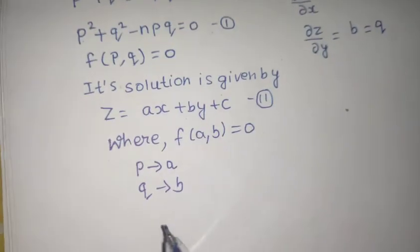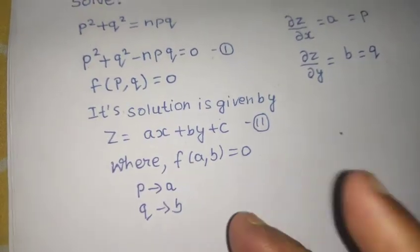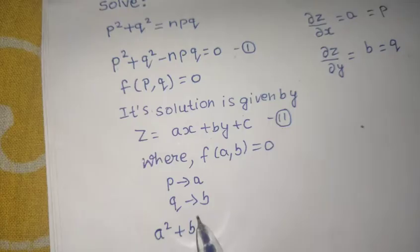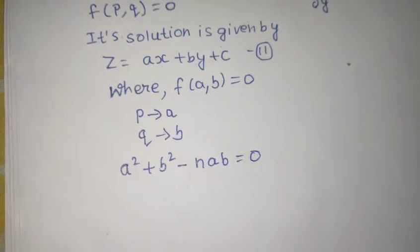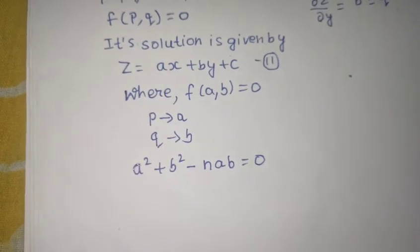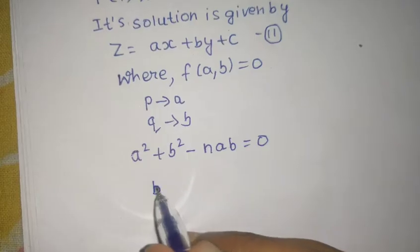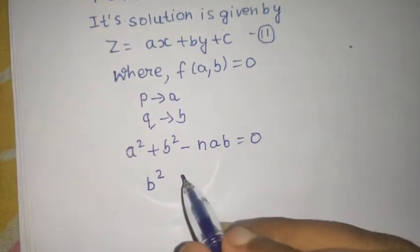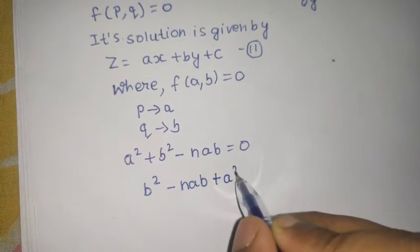Now, what else? Yes, I was telling that we have to replace either B in terms of A or A in terms of B. So, for that if you do this adjustment in equation number 1, you will get A square plus B square minus NAB equals to 0. Now, I want B in terms of A. So, what I am doing is I am writing this as B square minus NAB plus A square equals to 0.